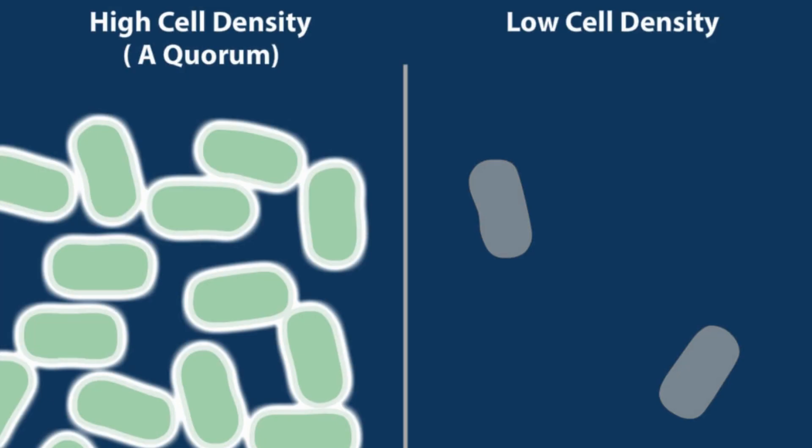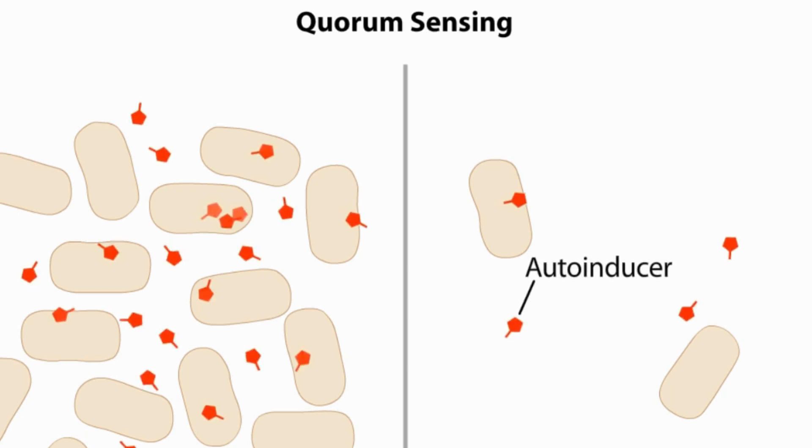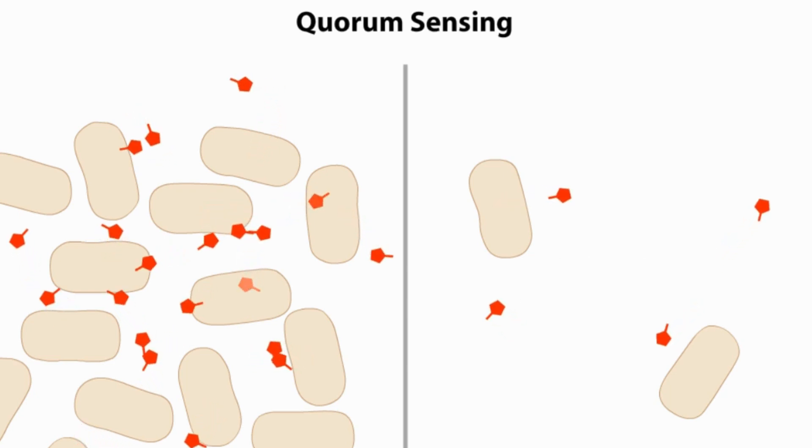The induction of a quorum sensing gene system requires the accumulation of molecules called autoinducers. After a cell produces an autoinducer, the molecule rapidly diffuses out of the cell.